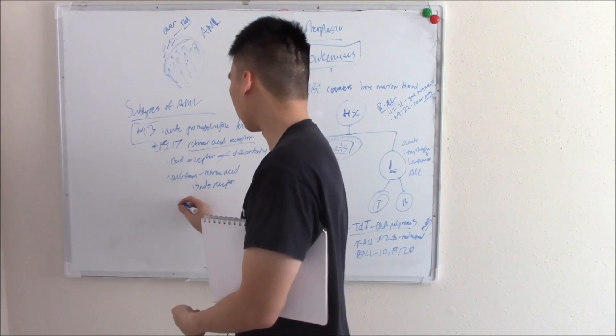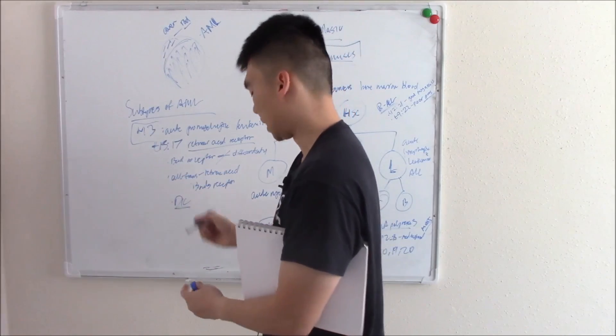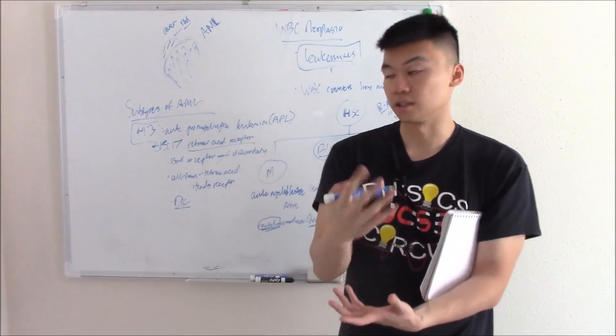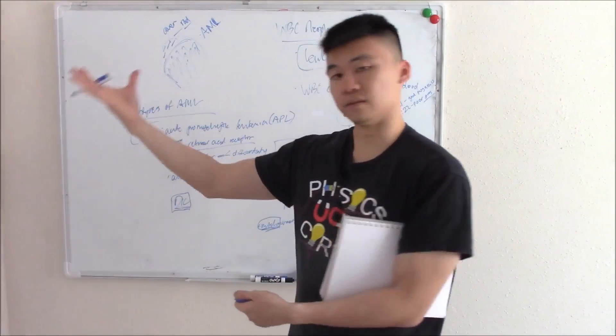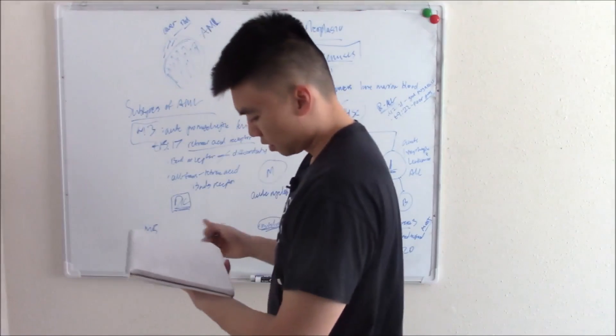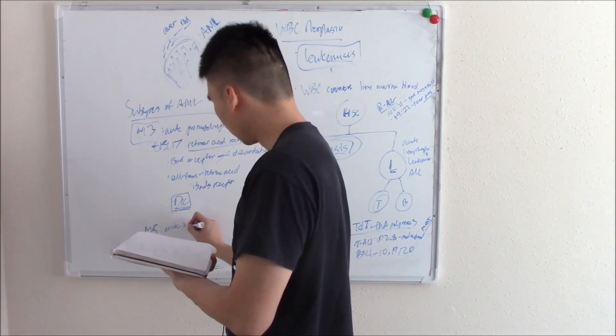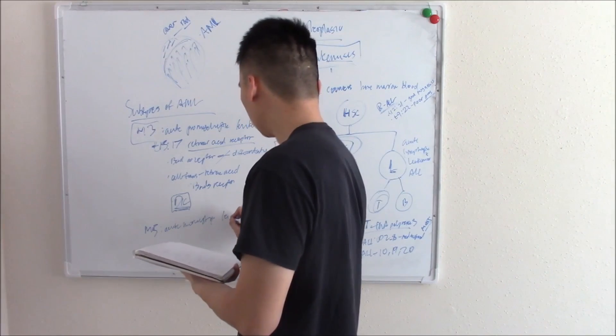Something else you should be aware of: the complication of M3 is DIC, because the cancer releases substances that can cause DIC. Another subtype is M5, also known as acute monocytic leukemia.